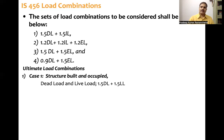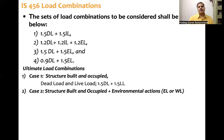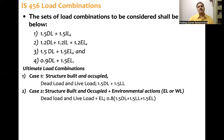The second load case is: structure is built, occupied, and also subject to earthquake or environmental load action. Because three loads are present, the total value is taken as 80% of the 1.5 load factor — that is, 0.8 times 1.5 equals 1.2. So the combination is 1.2 times dead load plus 1.2 times imposed load plus 1.2 times earthquake load.